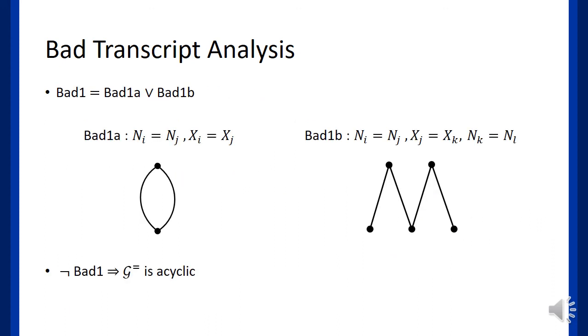Now let's find the detailed bad events. Bad1 holds if either Bad1a holds or Bad1b holds. Bad1a is the event which has length 2 cycles, and Bad1b is the event which has a unidirectional length 4 trail. Since our graph is always bipartite, both cycles should have even length, and G_eq is always acyclic without Bad1.